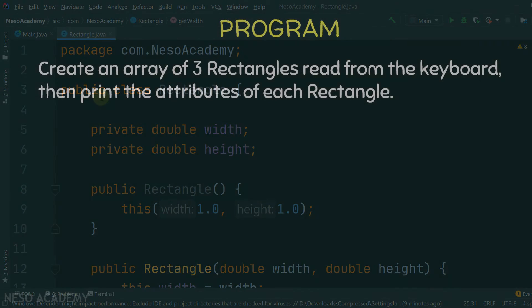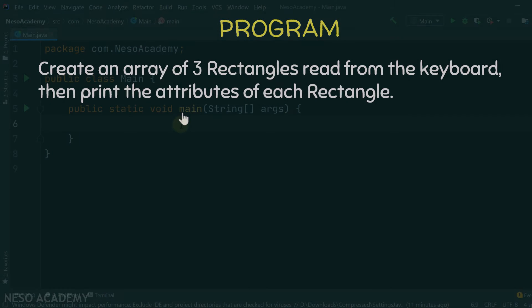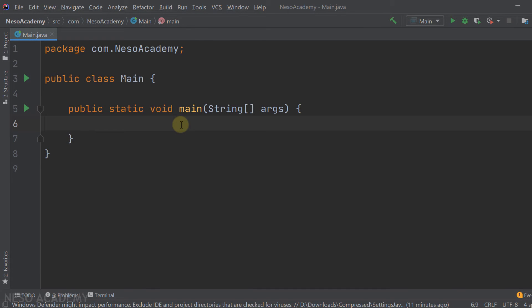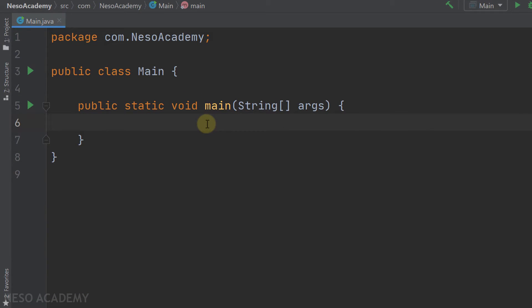Now let's write a small program using the Rectangle class. We want to create an array of three rectangles whose attribute values are read from the keyboard. After creating the three rectangles, we'll print their attributes. Let's go to IntelliJ — we're inside the main class, so we can write code in the main method.